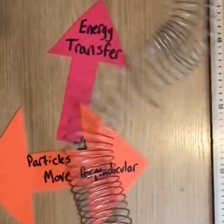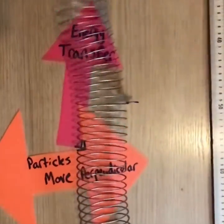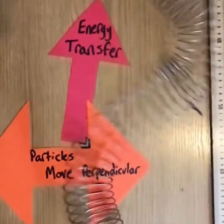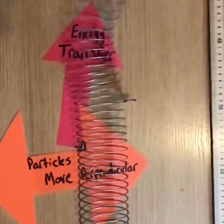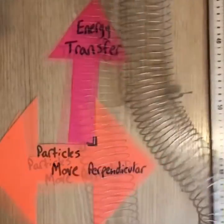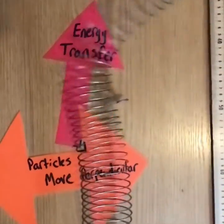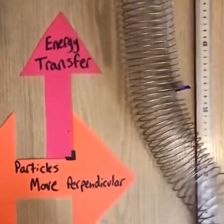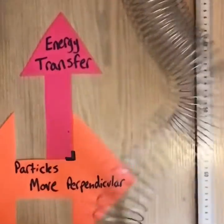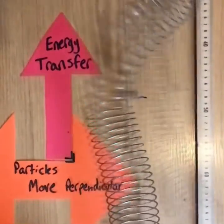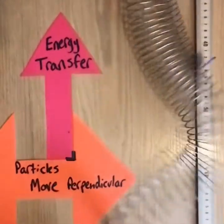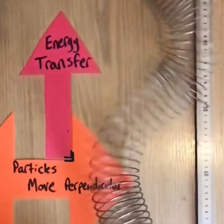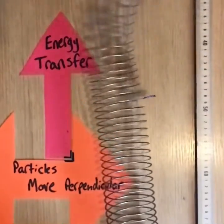Here you see the particles of the medium oscillating at right angles to the direction of energy transfer. The wave is still transferring energy from the bottom of the screen to the top of the screen, but the particles are moving at right angles to it — left to right as you see it on the screen. This is an example of a transverse wave.